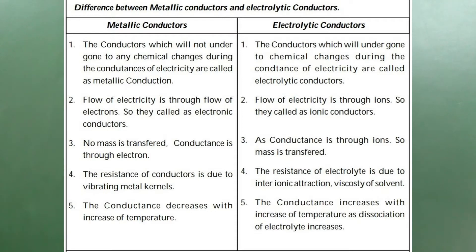First difference: Metallic conductors are the conductors which will not undergo any chemical change during the conductance of electricity. Electrolytic conductors are the conductors which will undergo chemical changes during the conductance of electricity.